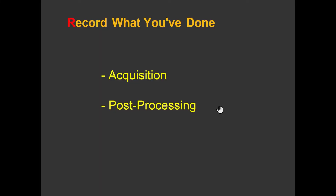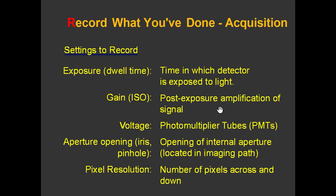Record what you've done. You need to record what you've done when you acquired the image, and you need to record what you've done in post-processing. What are the things you need to record when you acquire an image? Depending on the camera and system you use, it varies. With fluorescence, for example, you want to know the exposure, the gain, the voltage, the aperture opening, the pixel resolution, the contrast, the bit depth.